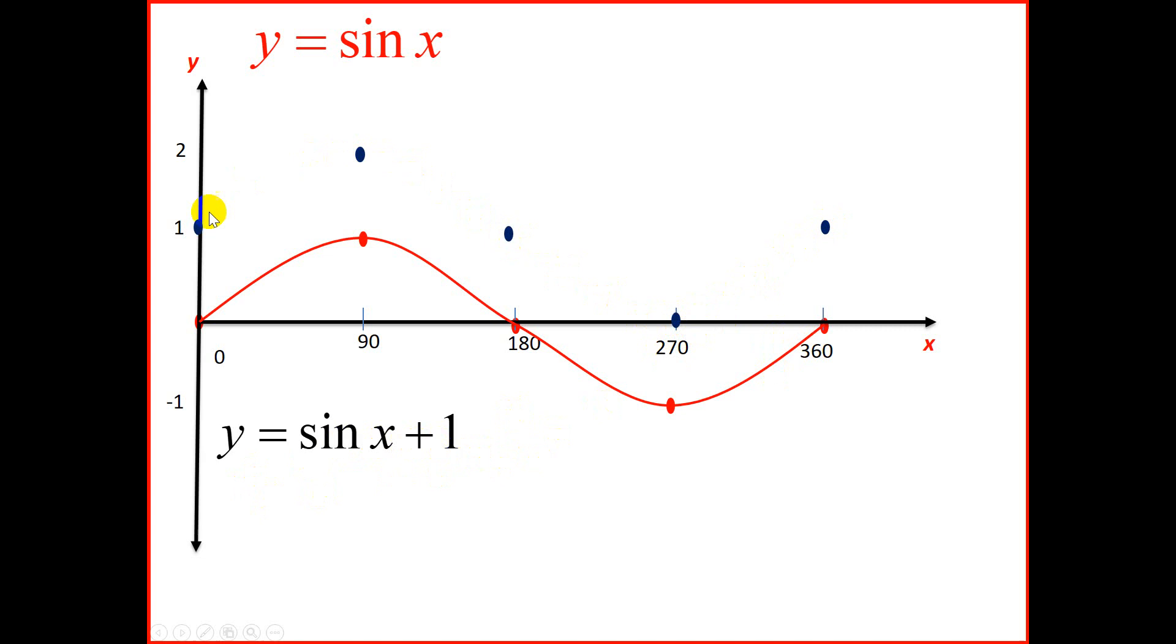And we're going to join these dots to get our sine graph. That is the graph of y equals sine x plus 1. So what is the difference between sine x and sine x plus 1? You will notice that the graph, the red graph, has moved up by 1 unit. So we see a vertical shift of the graph.